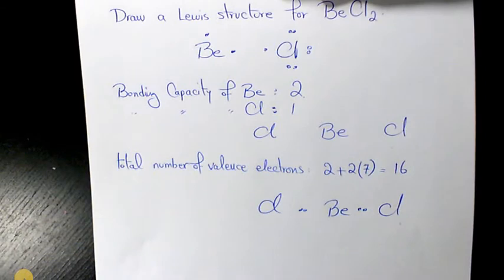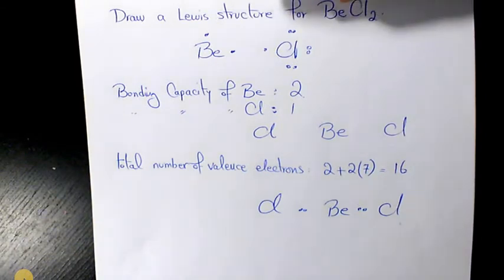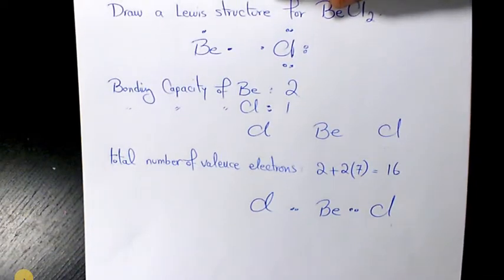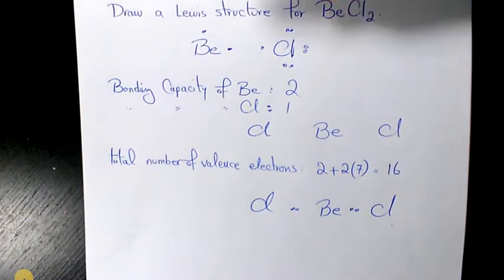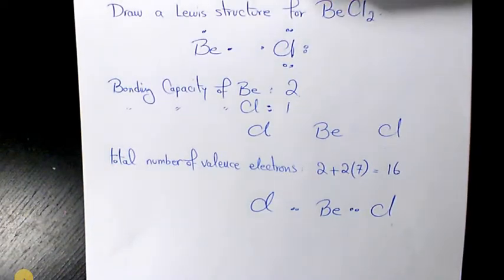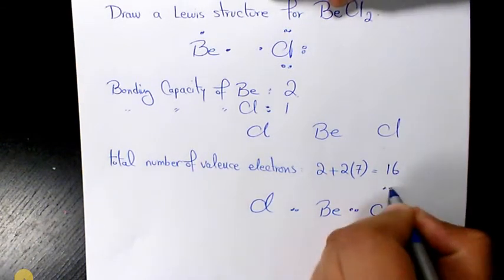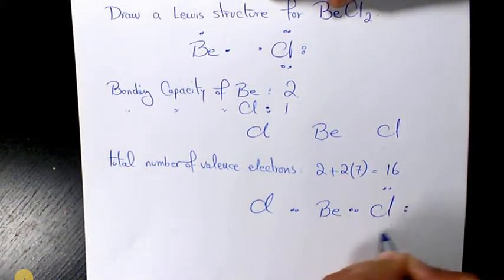Then we need to place pairs of the remaining valence electrons as lone pairs on the surrounding atoms, not on the central atom. We need to follow the duet rule for hydrogen atoms and the octet rule for all other atoms: one two, one two, one two, one two, one two, one two.